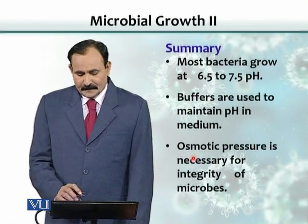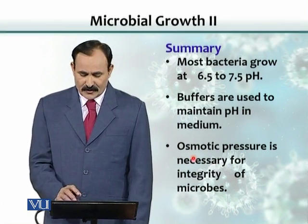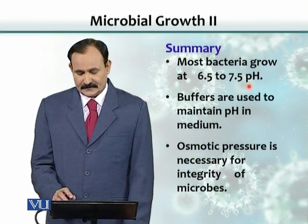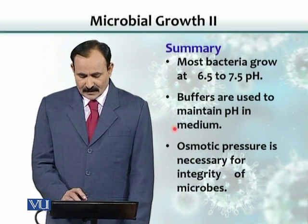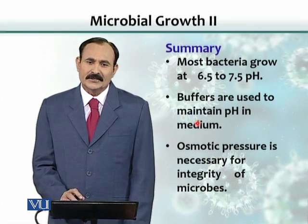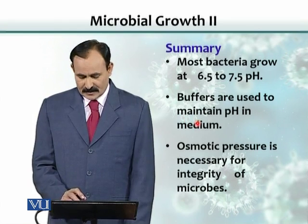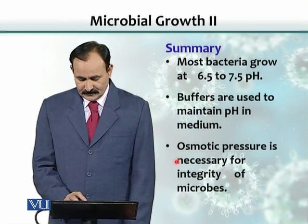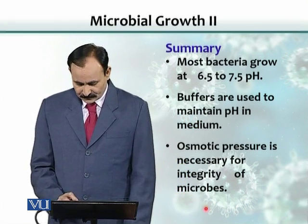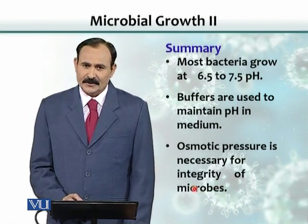In summary, most bacteria like to grow between pH 6.5 to 7.5. We use buffers for maintaining bacterial growth in the lab. Osmotic pressure is also very important because it maintains the integrity of microbes.